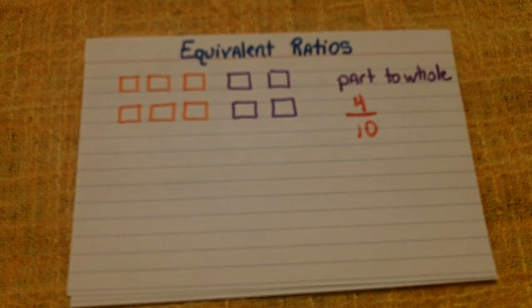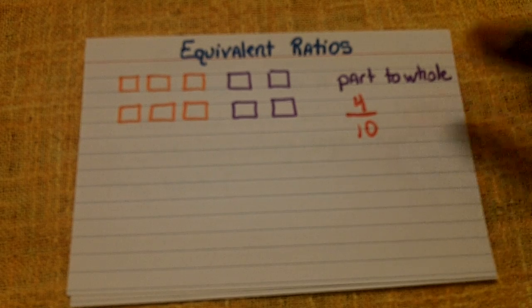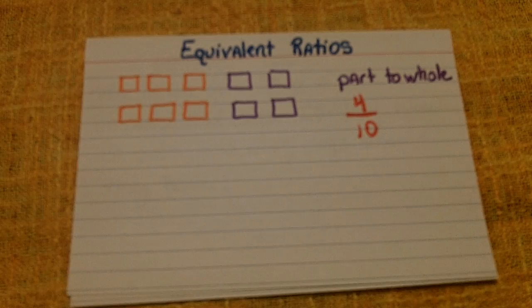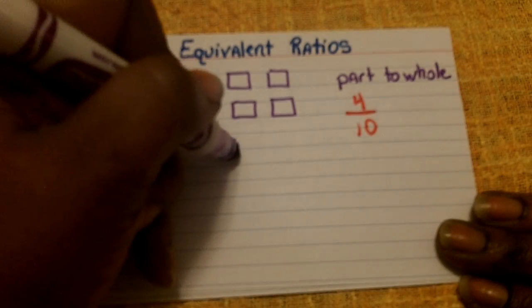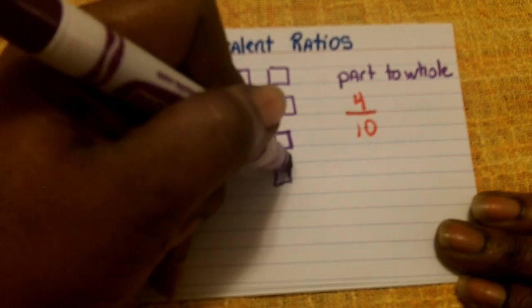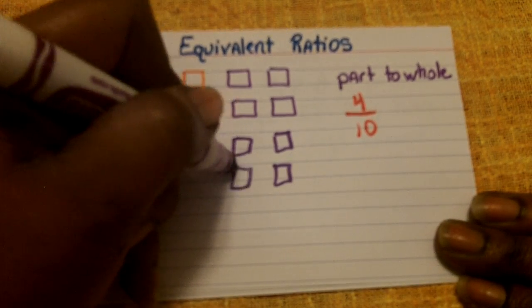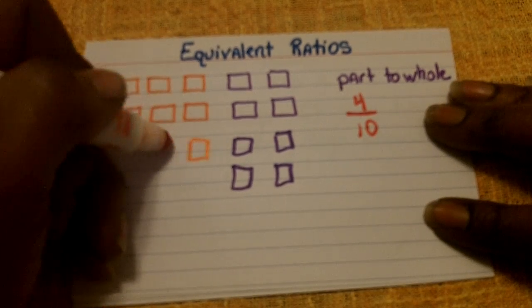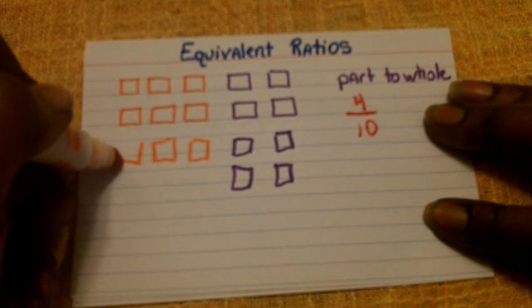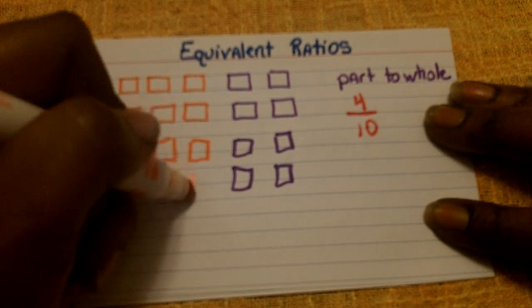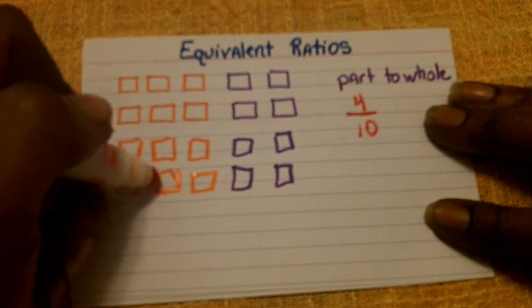So let's say, for example, instead of ten total squares, I actually had twenty. So that means that this ten amount of squares has doubled. So that means the purple has doubled as well as the orange has also doubled.